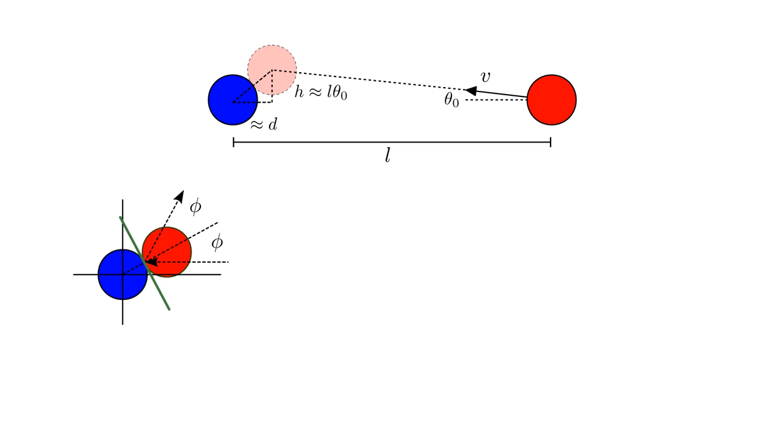The red ball's direction of motion will make an oblique angle, phi, with the line through the ball's centers. When it bounces off the blue ball, it will travel at that same angle, but in the opposite direction relative to the center line. We can determine the angle phi from the top figure as approximately h over d, which is approximately L over d times theta-zero.